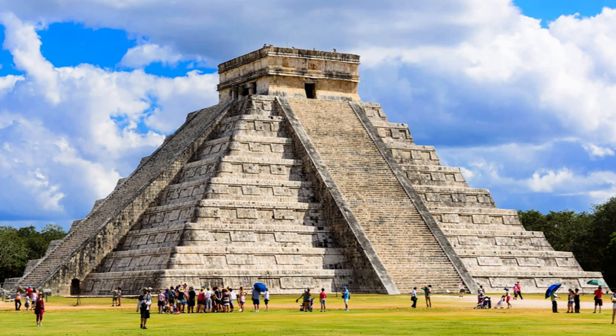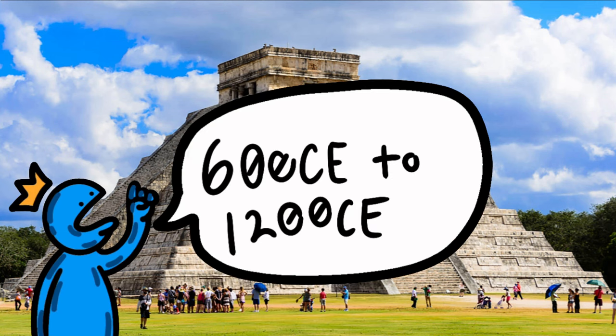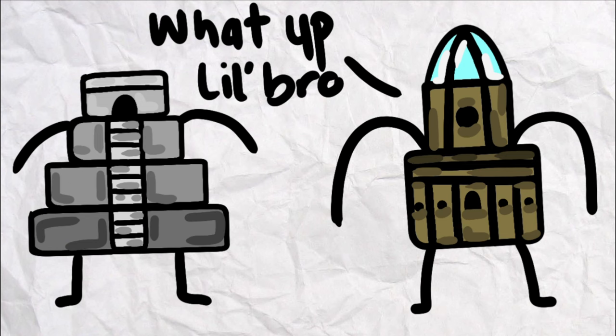Wonder number three, Chichen Itza. The major structure was built pretty recently between 600 CE and 1200 CE, being younger than the Oxford University.